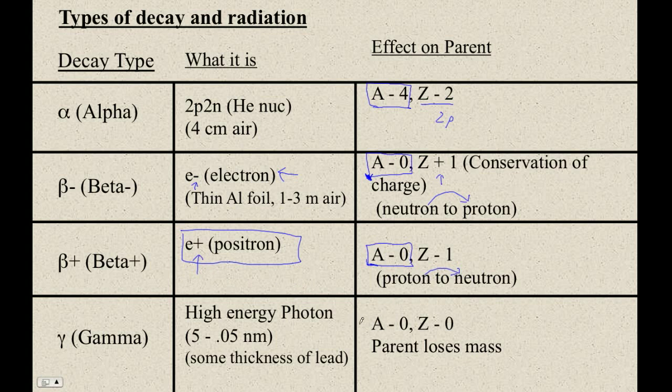And then finally, gamma decay, all it does is it basically, there's no change in the atomic mass number, and since photons have no charge, they're just photons, there's no change in the charge. But the parent loses an amount of mass equal to the energy of that photon. So, this is actually a fairly simple decay. Now, let's do some examples of this.